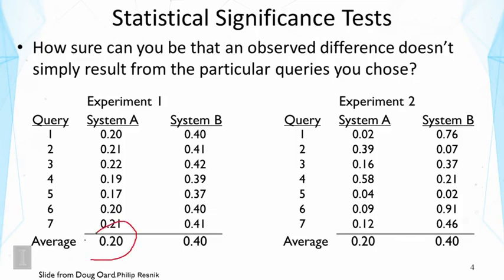You can see the mean average precision is exactly the same in both experiments — 0.2 for System A and 0.4 for System B. So they are identical in terms of the average. Yet if you look at the exact average precision for different queries in detail, you will realize that in one case you would feel you can trust the conclusion given by the average, and in another case you will feel uncertain. Why don't you take a look at all these numbers for a moment.